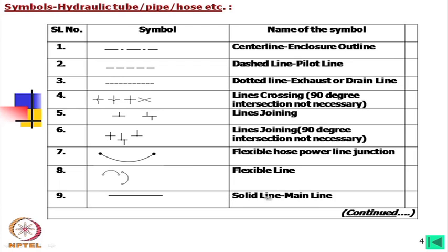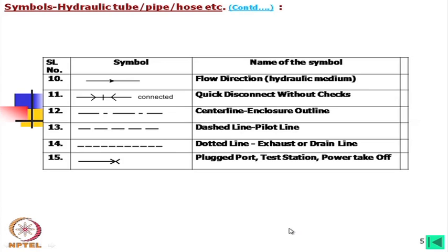The solid line usually means the main line. If an arrow is given, this indicates the direction of flow, usually of hydraulic medium — if the triangle is filled, it is hydraulic; if not filled, it is air or gas. This is a quick connector or disconnector symbol.